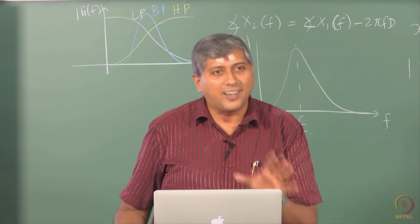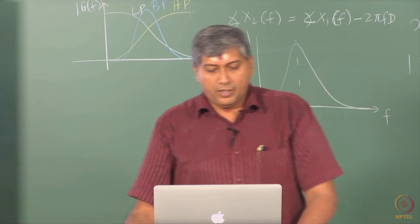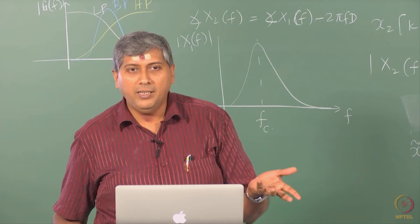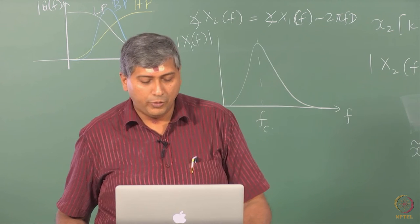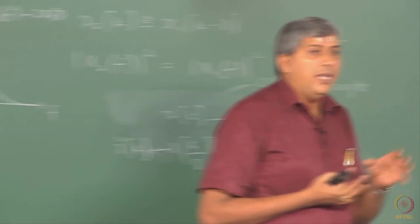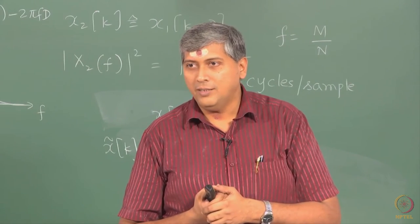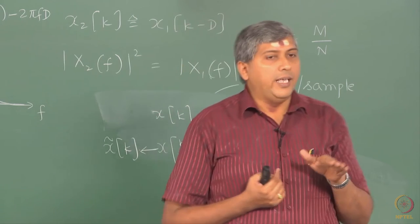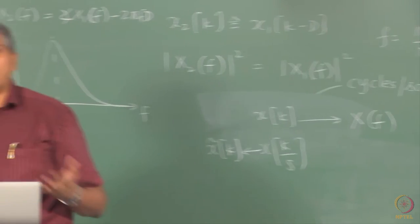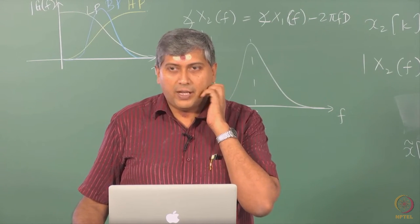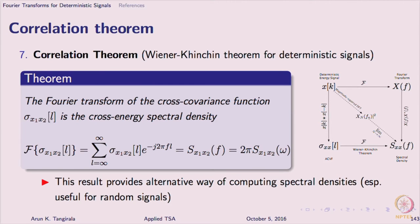We will also discuss this briefly in the context of random processes, and then you will understand what is meant by white noise and colored noise. Now we move on and look at the dual of convolution: you should expect that product in time domain corresponds to convolution in frequency domain — that is the beauty of duality. And finally, we look at the correlation theorem, which is nothing but the equivalent of the Wiener-Khinchin theorem in the stochastic world. This is the Wiener-Khinchin theorem version for the deterministic world. It says that the Fourier transform of the cross covariance — signal processing people call this cross correlation — is nothing but your cross energy spectral density.